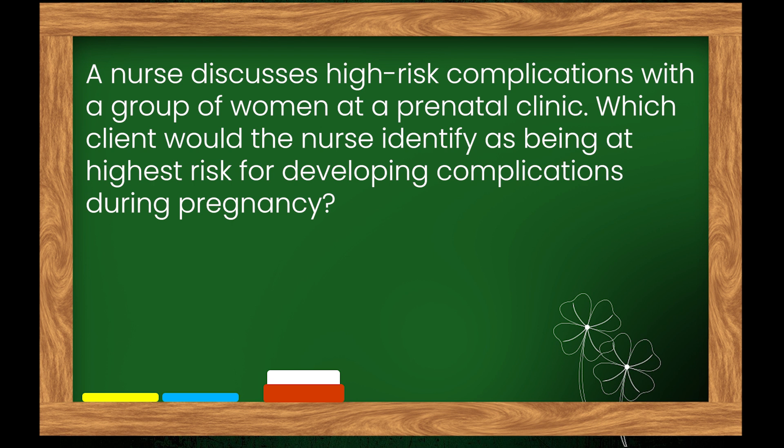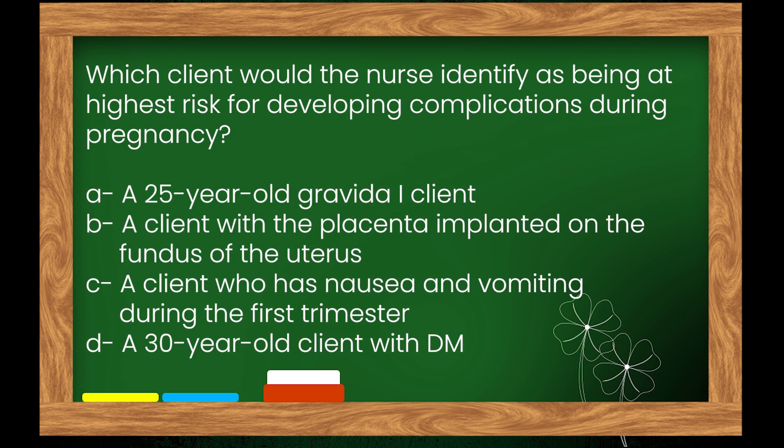Question 4: A nurse discusses high-risk complications with a group of women at a prenatal clinic. Which client would the nurse identify as being at highest risk for developing complications during pregnancy? Options: A. A 25-year-old gravida I client, B. A client with the placenta implanted on the fundus of the uterus, C. A client who has nausea and vomiting during the first trimester, D. A 30-year-old client with DM. The right answer is option D: a 30-year-old client with DM.